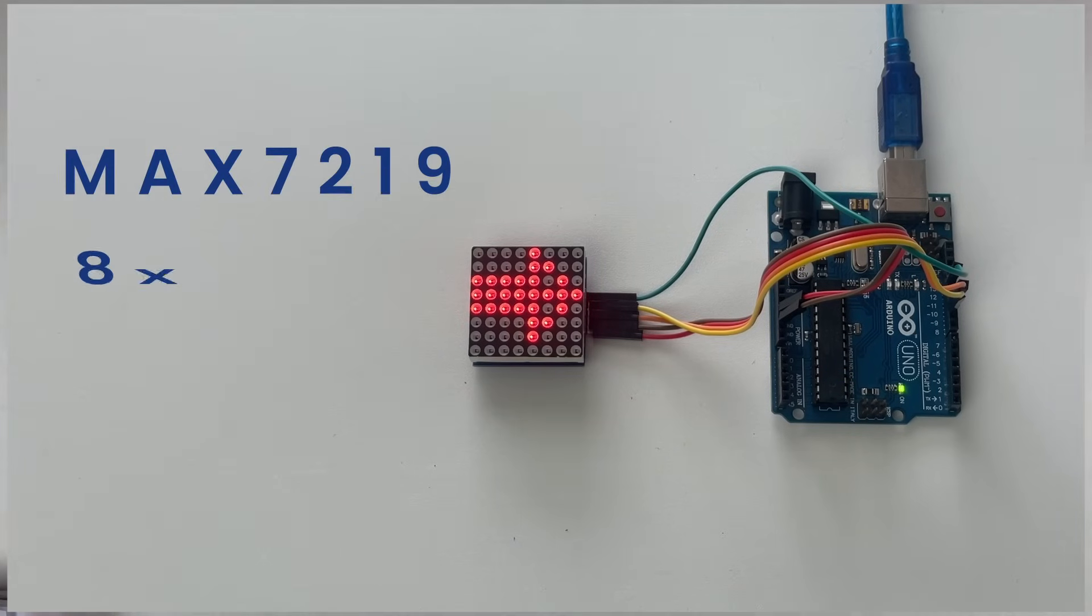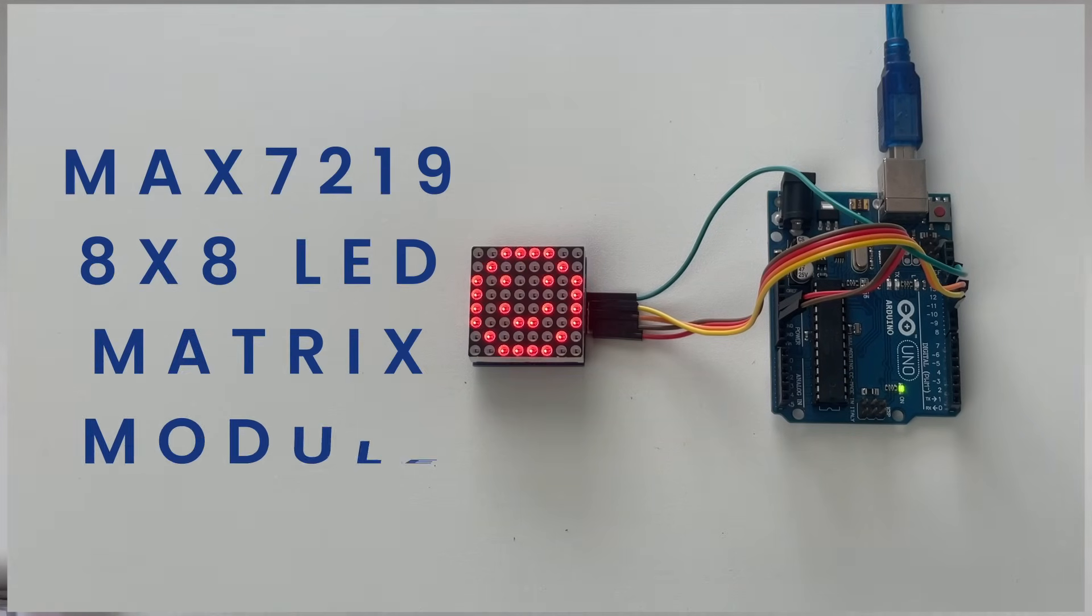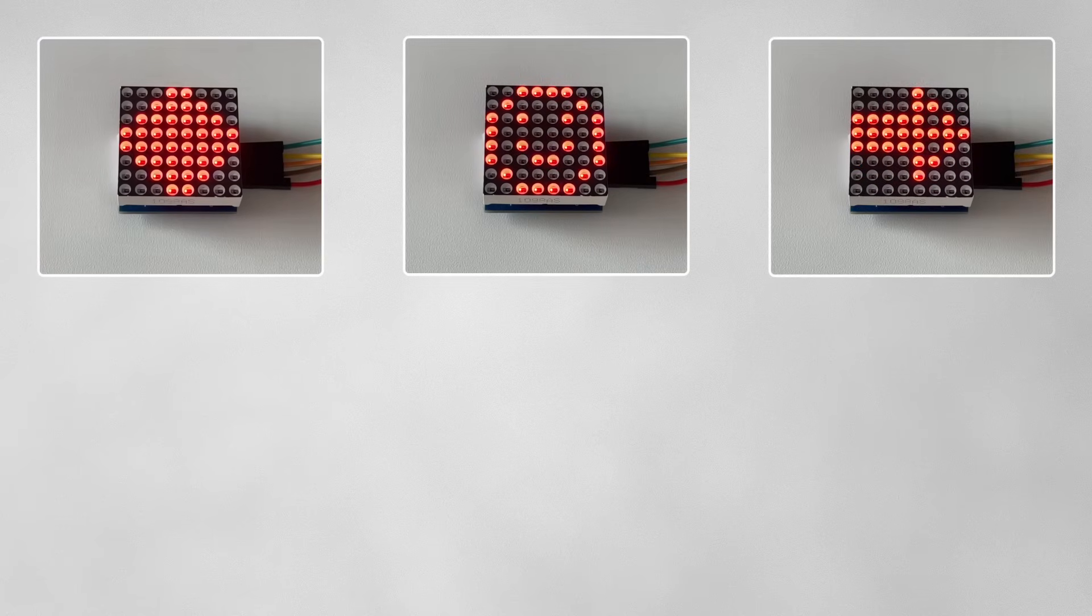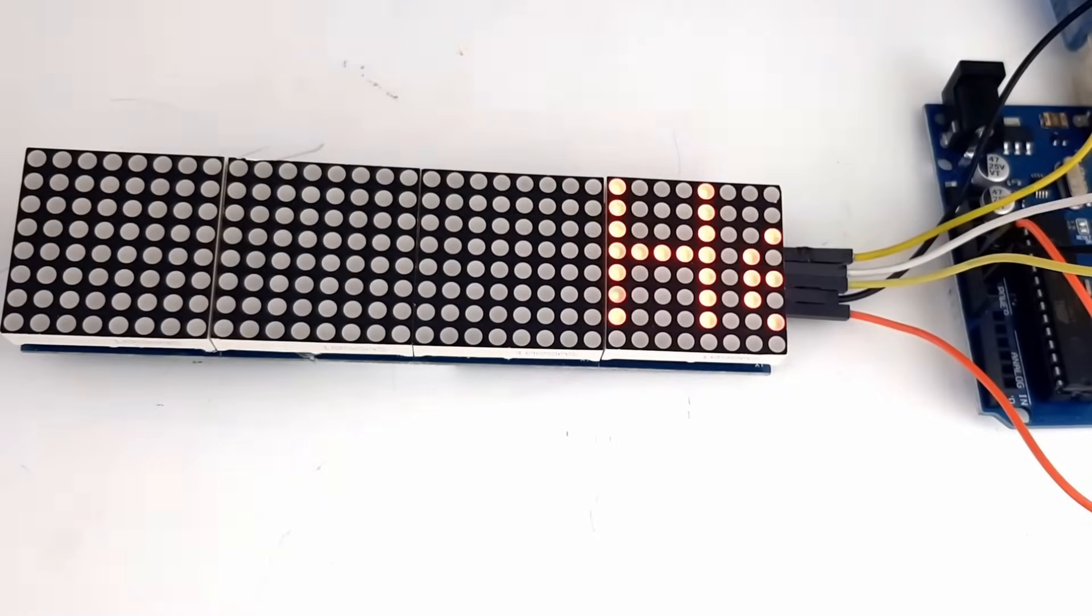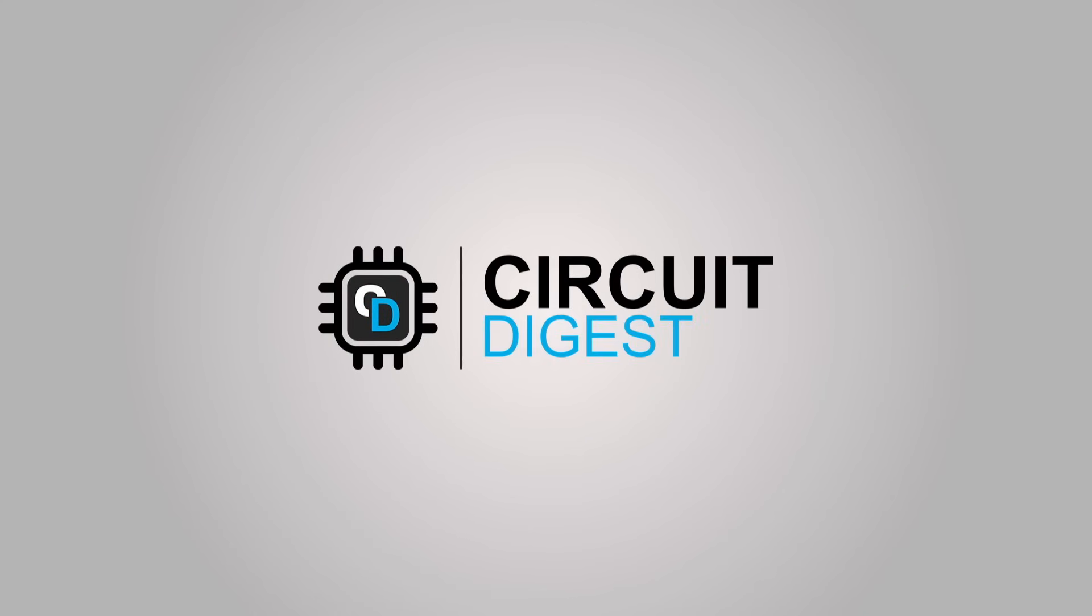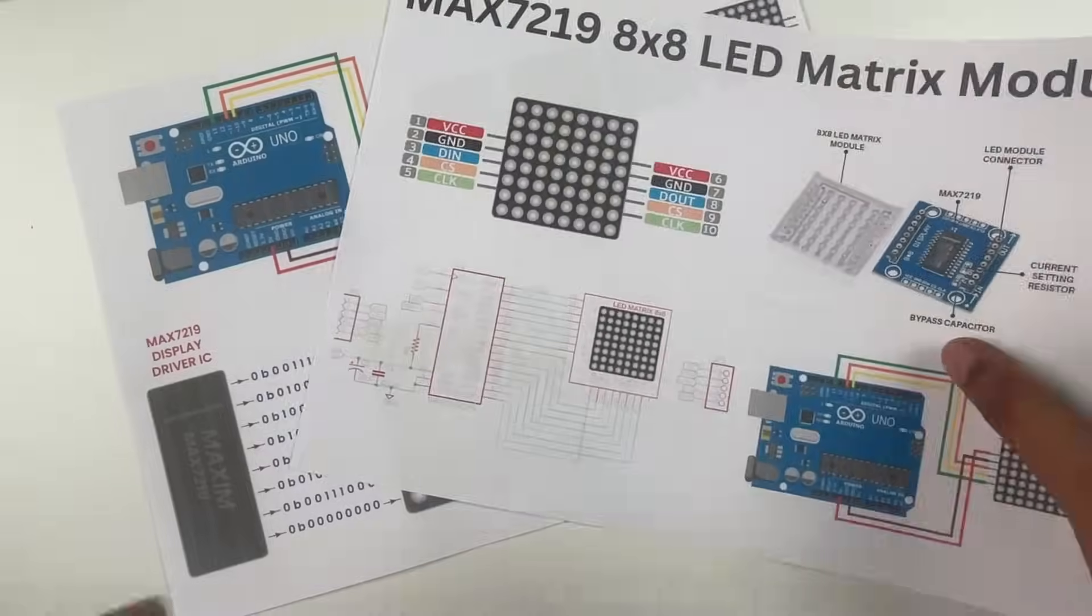Today let's learn about the MAX7219 8x8 LED matrix modules. You can use these modules to display simple animations, emojis, symbols, letters, or even combine multiple of these displays to show text messages. In this video we'll understand the basics of this module and also learn how to use it with a microcontroller like Arduino.